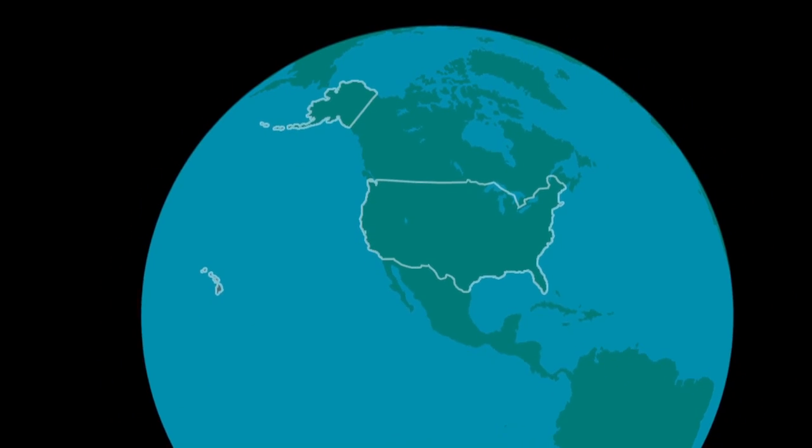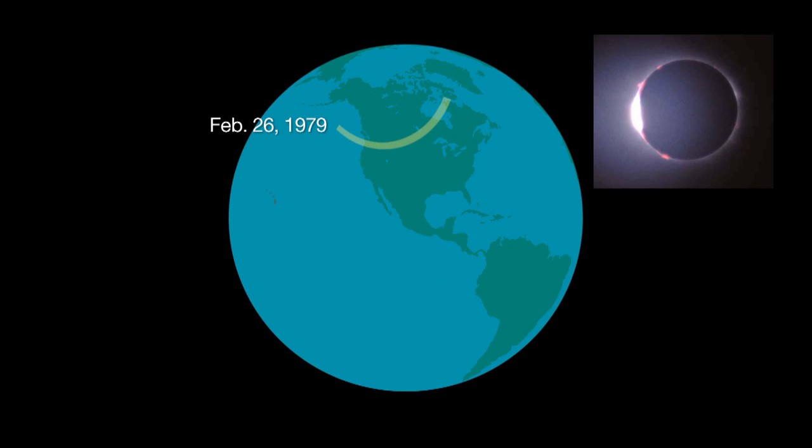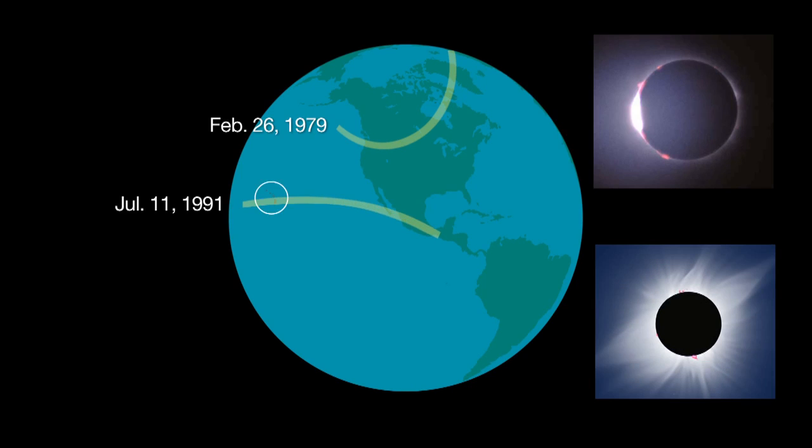The only total solar eclipses visible in the U.S. in the last 40 years were in 1979, visible in the northwest part of the country, and 1991, visible in Hawaii.